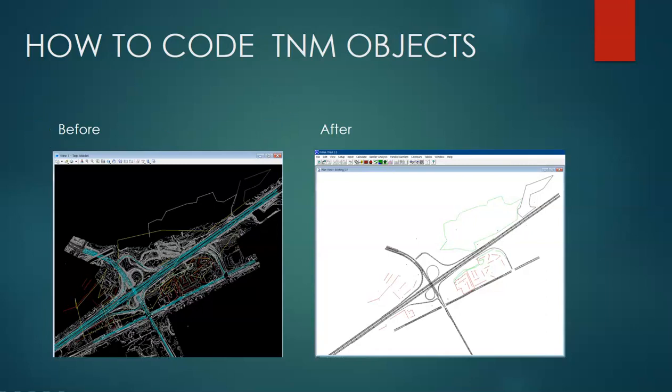This is a very important step in development of the TNM model. In the examples used in this presentation we're going to demonstrate use of the CAD platform MicroStation version V8i and the traffic noise model FHWA TNM version 2.5. The principles we're talking about really extend to other platforms and also other noise models, so the general principles can be applied to other types of models.